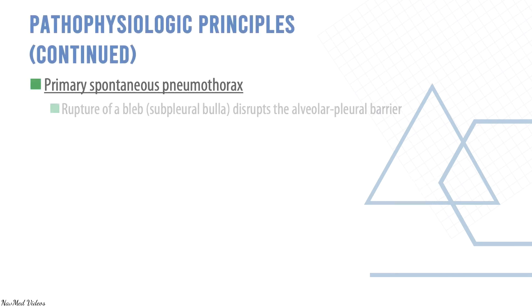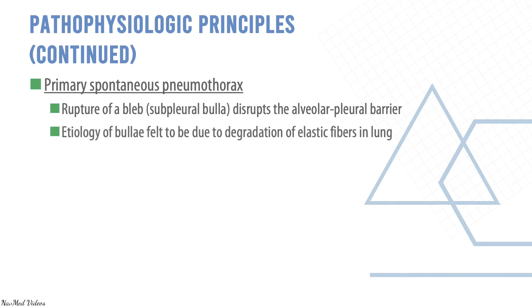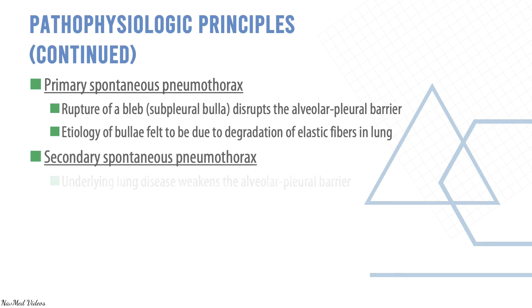Primary spontaneous pneumothorax results from rupture of a bleb — a pleural bulla disrupts the alveolar-pleural barrier. The etiology of the bulla is felt to be due to degradation of elastic fibers in the lung. Secondary spontaneous pneumothorax is usually due to underlying lung disease that weakens the alveolar-pleural barrier.